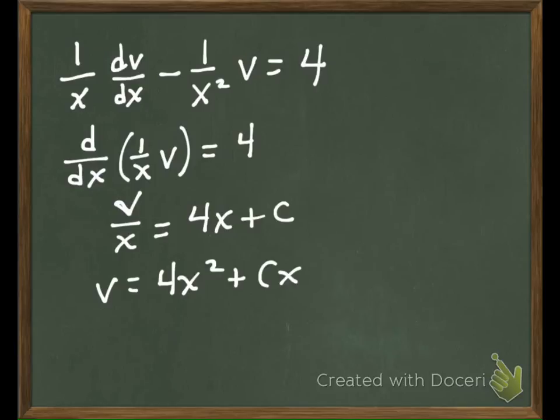Wouldn't it be 1 over x squared times v? This is f right here. This is f and this is f prime. So the derivative of x to the negative 1 is negative x to the negative 2.